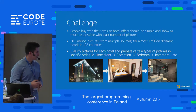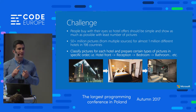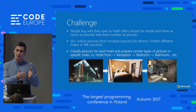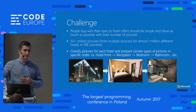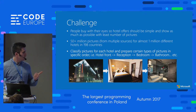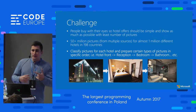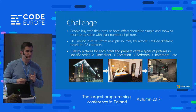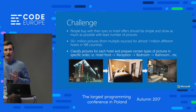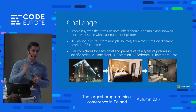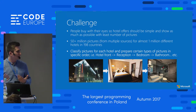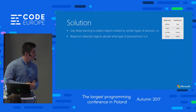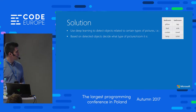The challenge was to find a way to first classify the images — whether a picture is a bedroom, bathroom, hotel front, reception, or restaurant. The second challenge was to determine which picture is better. If we have one hotel with hundreds of pictures and 10 to 15 images of the bathroom, we want to select the one that best describes what the hotel offers.